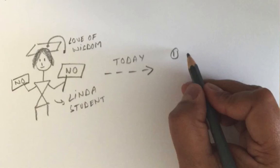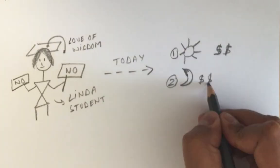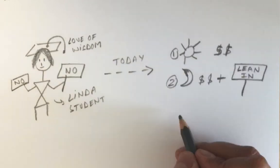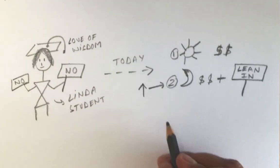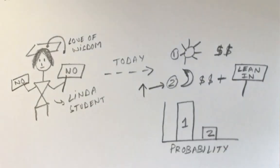Which is more probable today? One: Linda is a bank teller. Two: Linda is a bank teller and is active in the feminist movement. Most people choose option two, even though the probability of Linda being a banker is far higher than Linda being a banker and active in the feminist movement.